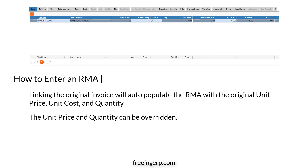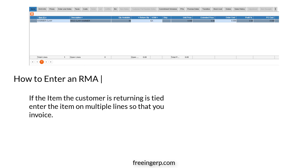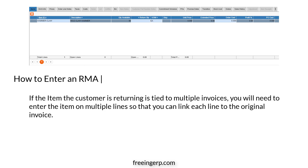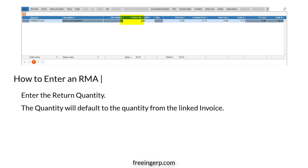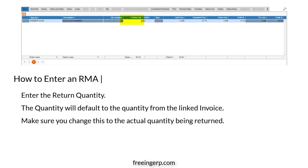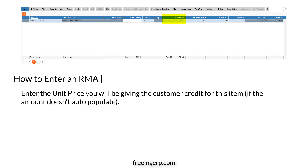However, the unit price and quantity can be overridden. If you don't link to an original invoice, the system will populate the unit price with the customer's current pricing. If the item the customer is returning is tied to multiple invoices, you will need to enter the item on multiple lines so that you can link each line to the original invoice. Enter the return quantity — the quantity will default to the quantity from the linked invoice, so make sure you change this to the actual quantity being returned. After that, enter the unit price you will be giving the customer credit for this item if the amount doesn't auto-populate.